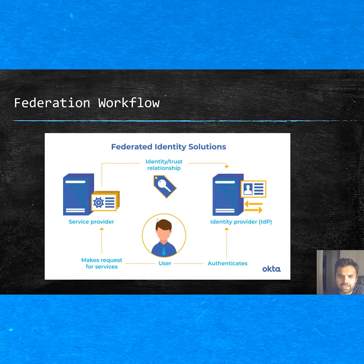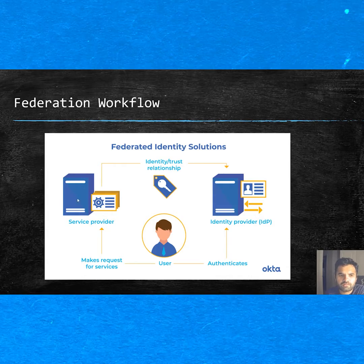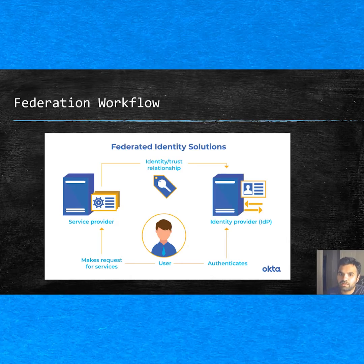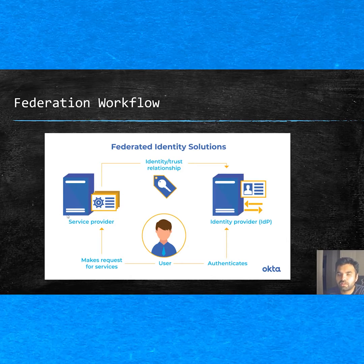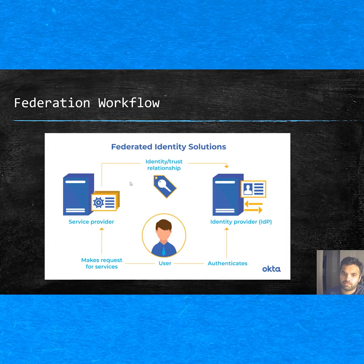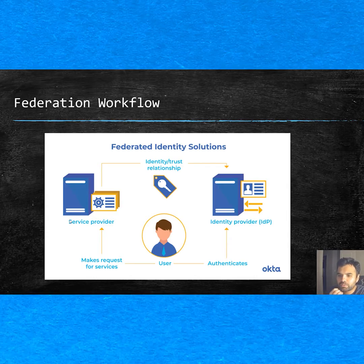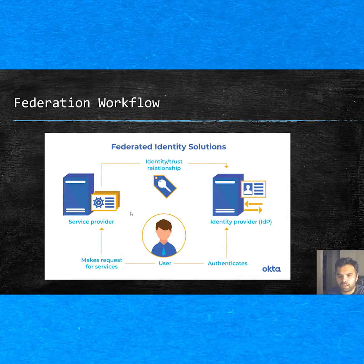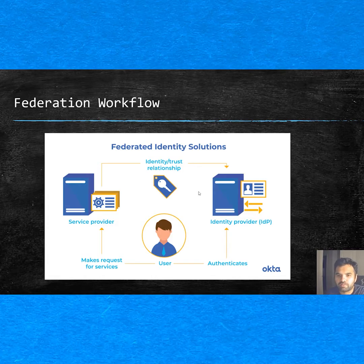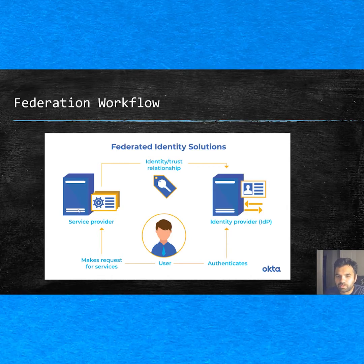Suppose you are a user and there are two services you want to use — for example, Gmail as one application and SharePoint as another. This diagram, which is from Okta (they had a great one, so I didn't want to reinvent the wheel), shows what happens. The user makes a request here — let's say you as a user want to access SharePoint.